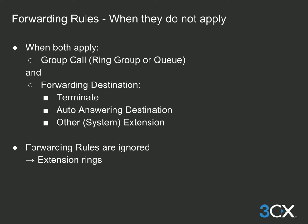Forwarding rules are not triggered in some cases. Whenever a call is received through a queue or ring group, the forwarding rules will not be followed if: the destination is configured as end call, or if the call forwards to any other auto-answering extension such as another queue, digital receptionist, or any other user or system extension. In all these cases the extension will ring normally and will not be forwarded based on the forwarding rules.